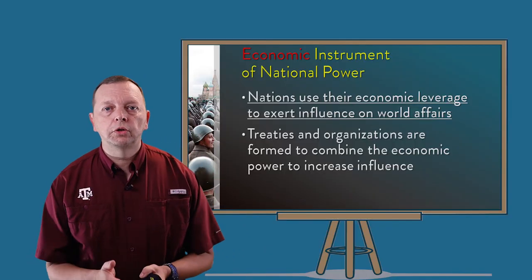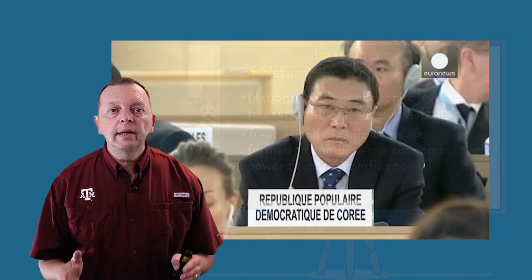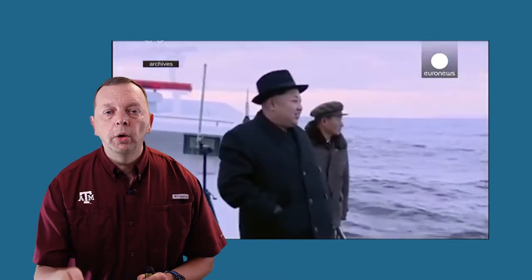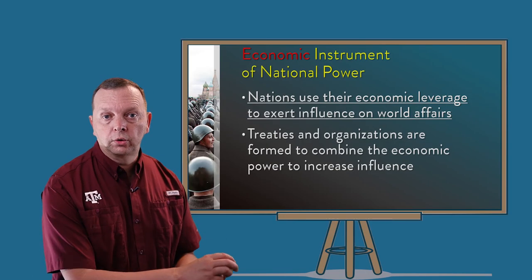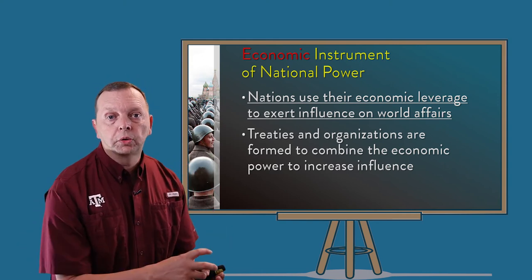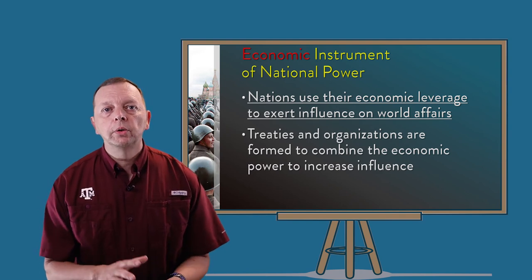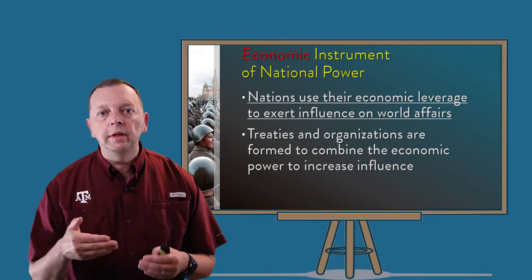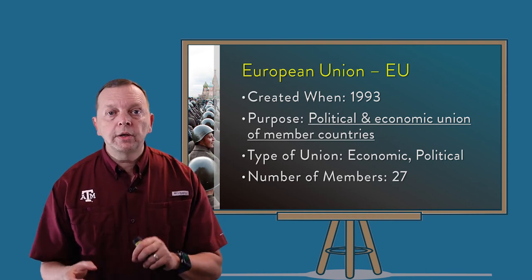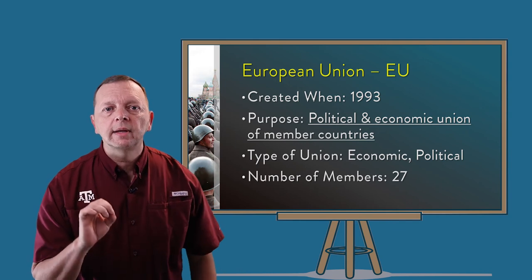The last instrument is the use of a country's economic power. Nations use economic leverage to get what they need in world affairs. For example, in 2017, the United Nations passed a set of sanctions on North Korea that sought to prevent North Korea from getting the resources it needed to continue building its nuclear missile program. In addition to blocking resources from going to another country, economic power can also be used by providing economic aid to a country. This ability to either block trade or help with trade gives a country the ability to influence others. Countries also enter into treaties and foreign organizations to combine economic power — one of these is the European Union, or EU, which is an economic and political union. The predecessor of the EU was created right after World War II with the idea that if European countries were more economically connected, they would be less likely to go to war.